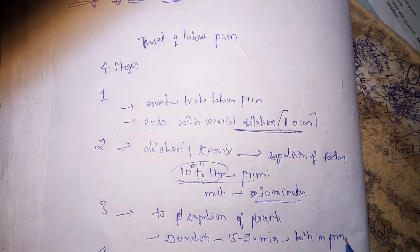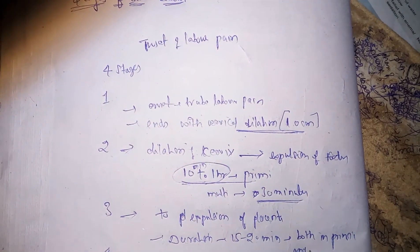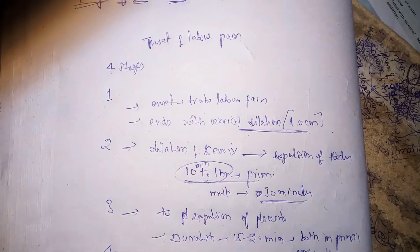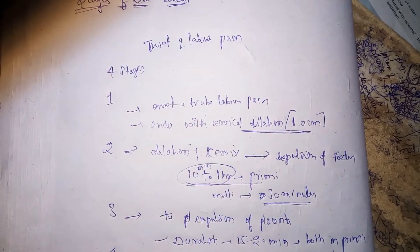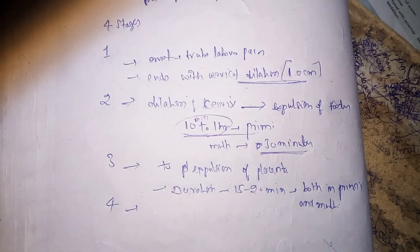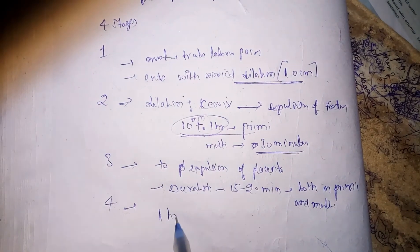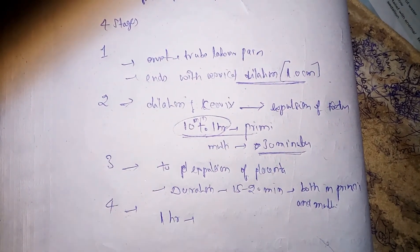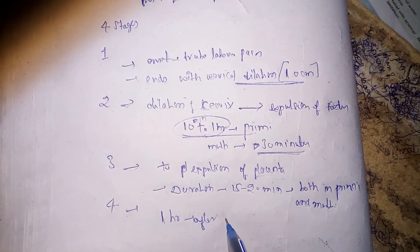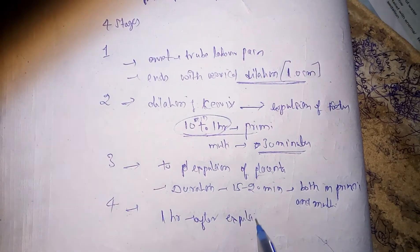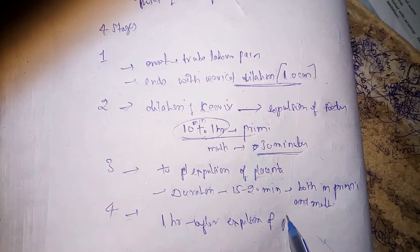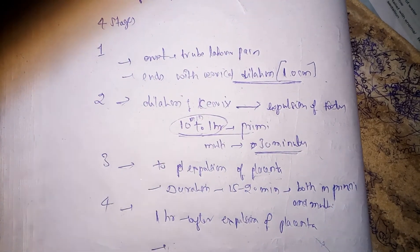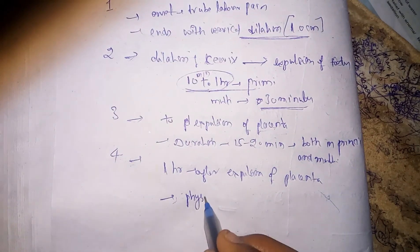The fourth stage of labor is one hour after expulsion of the placenta. During this stage, physiological chills are observed.